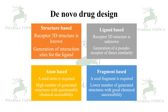De novo drug design is of four types: structure-based, ligand-based, atom-based, and fragment-based. In structure-based de novo drug design, the receptor 3D structure is known and leads to generation of interaction sites for the ligand. In ligand-based design, the receptor 3D structure is unknown and a pseudo-receptor or direct similarity approach is used. In atom-based design, a seed atom is required but generates a high number of structures with questionable chemical accessibility. In fragment-based design, a seed fragment is required, generating a lower number of structures with good chemical accessibility.